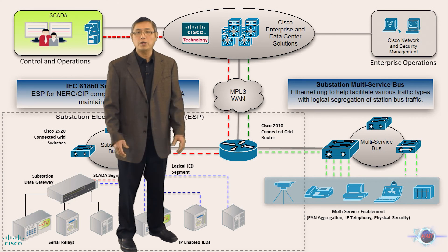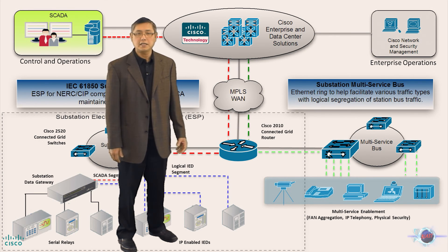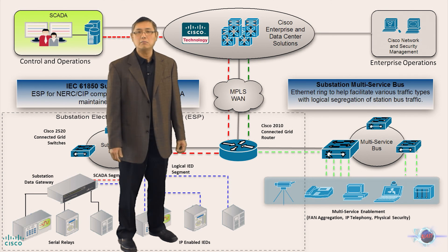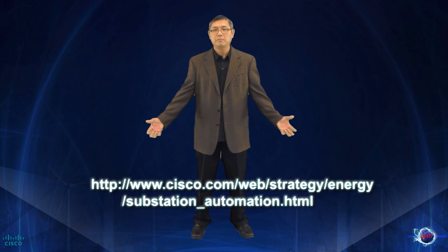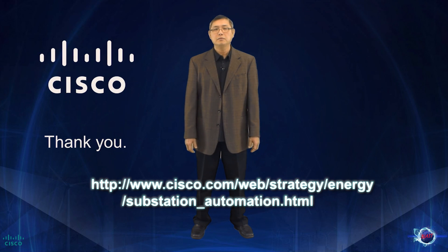I hope at this point you have a better understanding of how the CGR and CGS can create a layer of additional services. With these architectures, the Cisco vision becomes more compelling to our customers. For the most updated substation automation solution information, please refer to the link below. Thank you for watching this section of the Connected Energy Networks Substation Automation Architecture Overview.